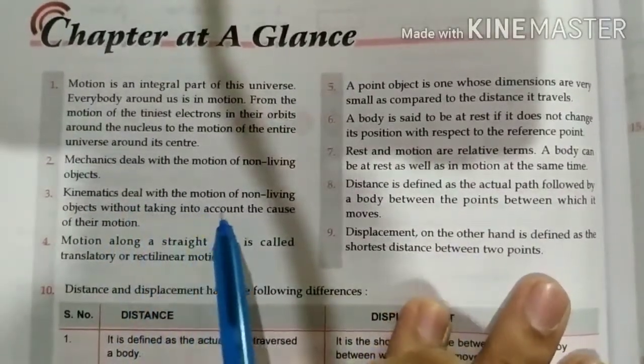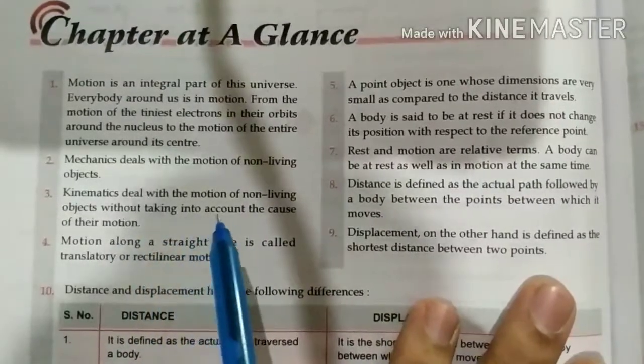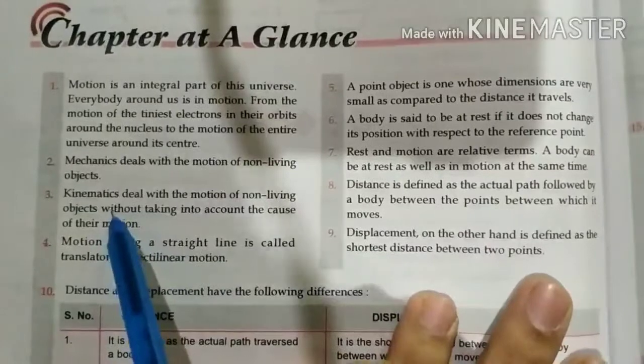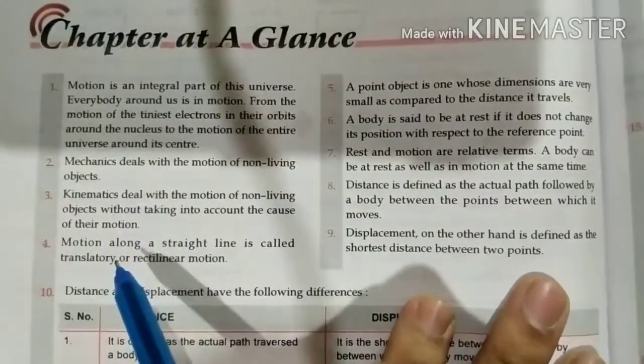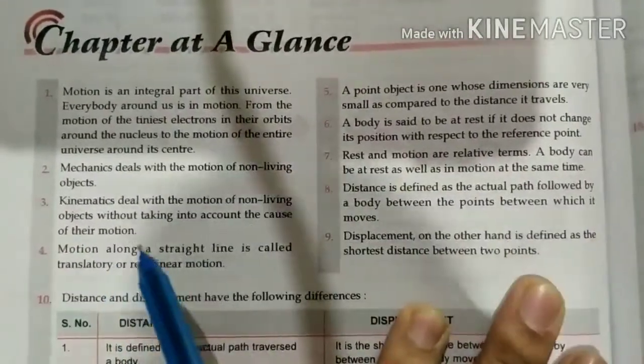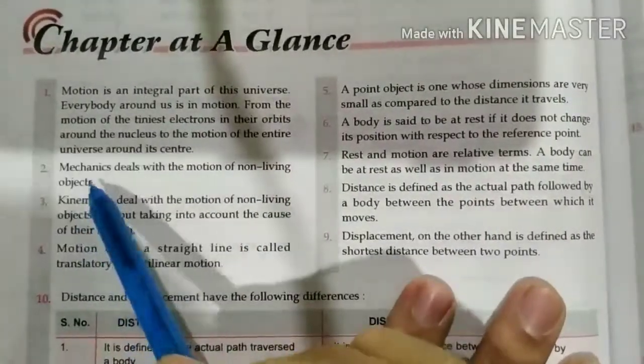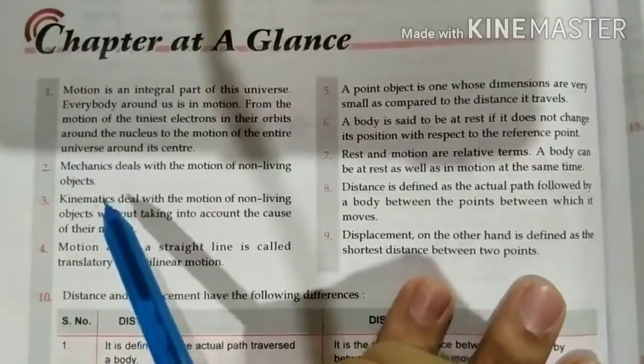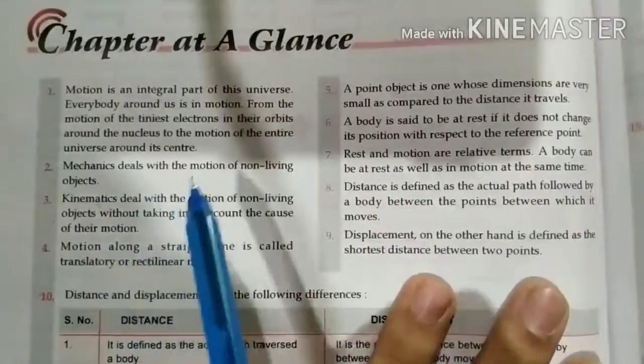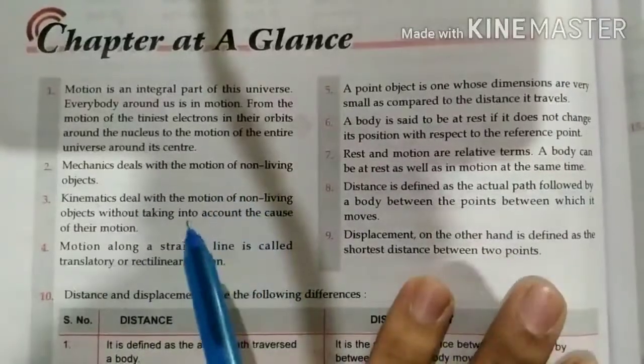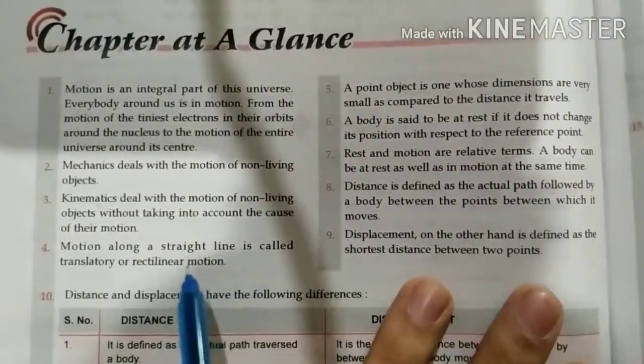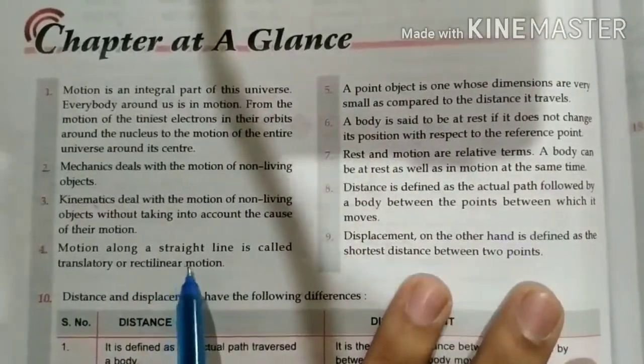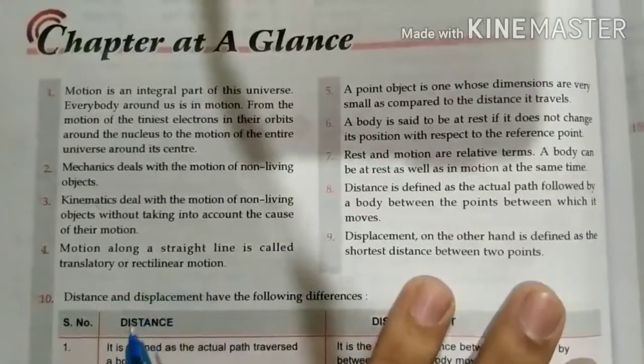Kinematics deal with the motion of the non-living object without taking into account the cause of the motion. We will not see the reason for its motion. The motion along a straight line is called translator or rectilinear motion. If a motion is in straight line, it will translate or rectilinear motion.